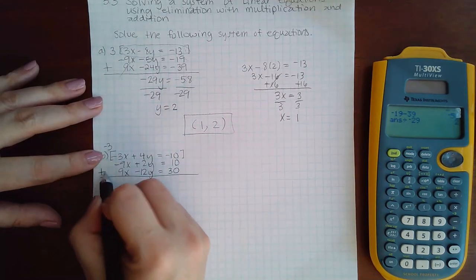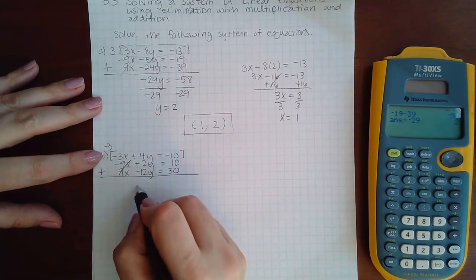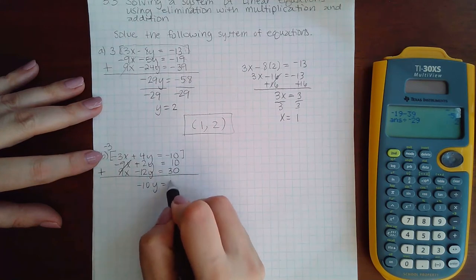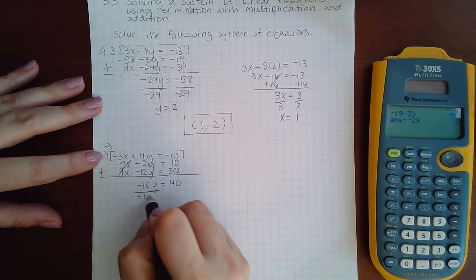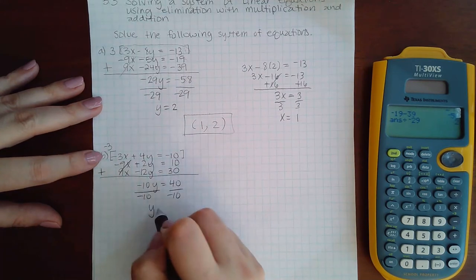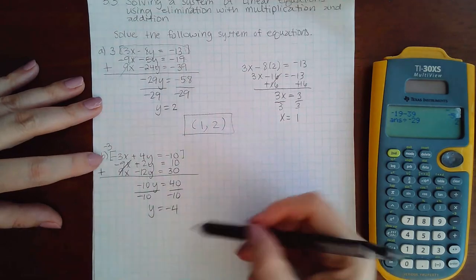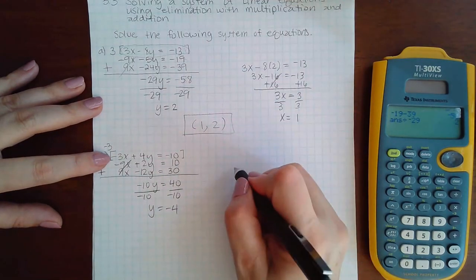And then if I combine these, those will cancel, I'll get negative 10y equal to 40. Divide by negative 10, I get y equals negative 4. Then I can plug that into the original equation inside that bracket.